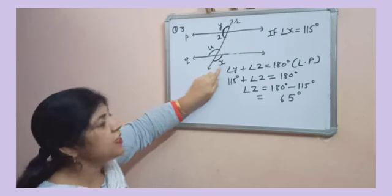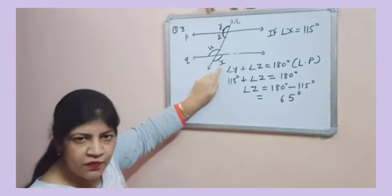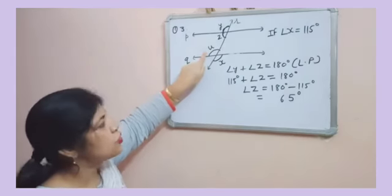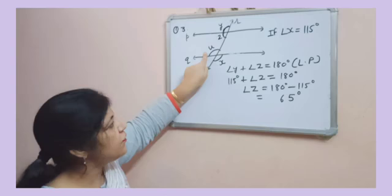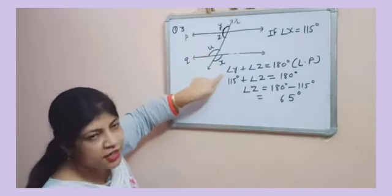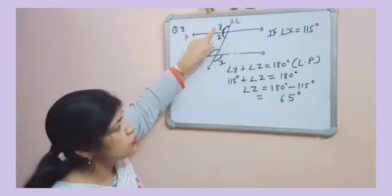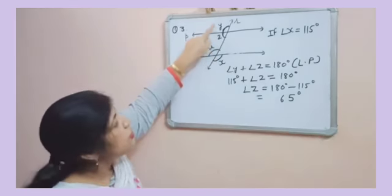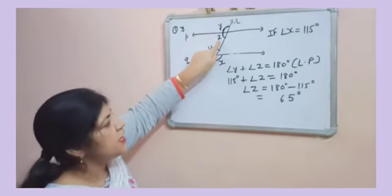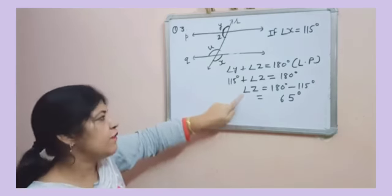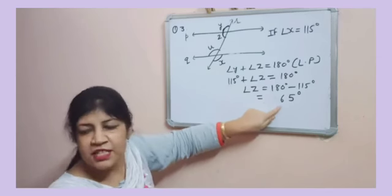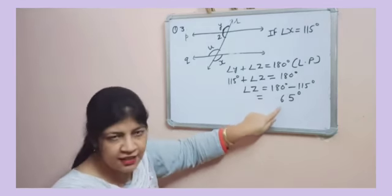You are given angle X, that is 115. So X will equal U by vertical opposite angles, so U will be 115 as well. And X and Y are alternate exterior angles, so Y will also be equal to 115. Y plus Z equals 180 degrees by linear pair, so you can find angle Z by linear pair. You have to subtract 115 from 180, you will get 65 degrees. Is that clear?